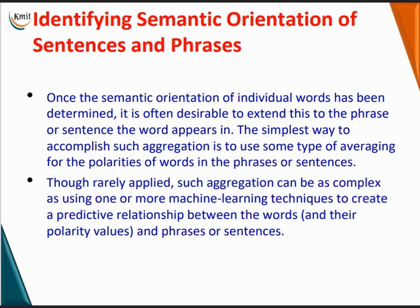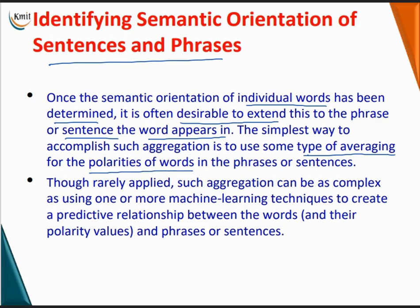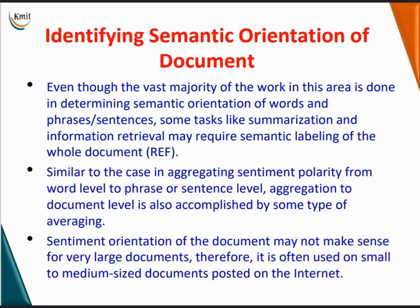Next, identifying the semantic orientation of sentences and phrases. Once the semantic orientation of individual words has been determined, it is often desired to extend this to the phrase or sentence the word appears in. The simplest way to accomplish such aggregation is to use some type of averaging of the polarity of words in phrases or sentences. More complex approaches may use one or more machine learning techniques to create a predictive relationship between the words and phrases or sentences.